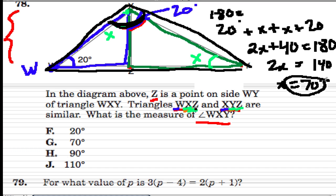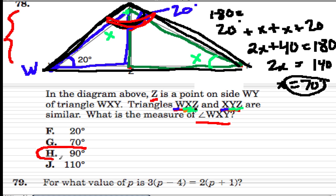Before we just circle 70, let's look at what they're asking for. They're asking for angle WXY, which is this whole angle right here — going back to our original problem. That whole angle is WXY. So it's not just x, which is 70, but it also includes the other 20 degrees we had there before. So it's 70 plus 20, or 90 degrees.